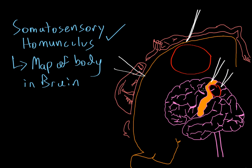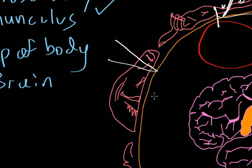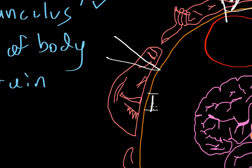Depending on what part of the cortex the surgeon places the electrode, the patient gets a sensation of some part of their body being touched. Surgeons do this to make sure they aren't removing parts of the cortex involved in sensation. For example, if the surgeon removed this part of the cortex, the patient would no longer have any feeling in the wrist or forearm. Similarly, if this other part were removed, the patient would lose sensation in the lips, because that region receives input from the lips.